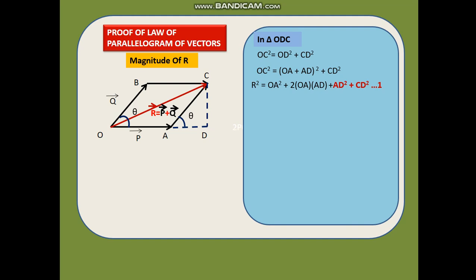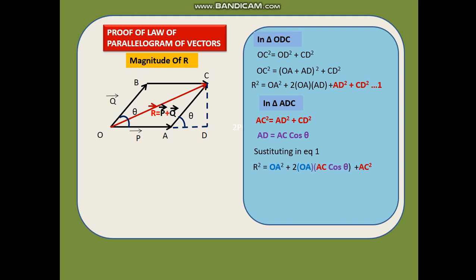We use the second right angle triangle ADC. Applying Pythagoras theorem: AC² = AD² + CD². Also by trigonometry, AD = AC cosθ. Substituting into equation 1: R² = OA² + 2·OA·AC cosθ + AC². Since OA = P and AC = Q, we get R² = P² + 2PQ cosθ + Q².